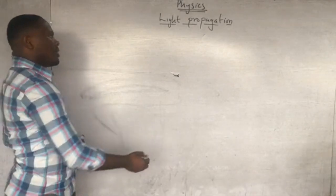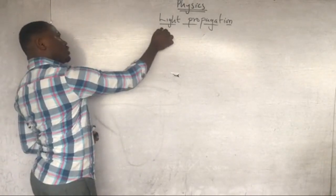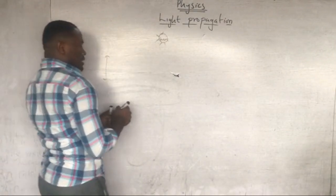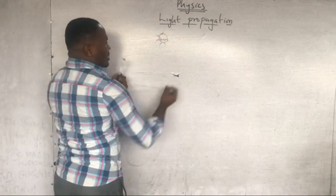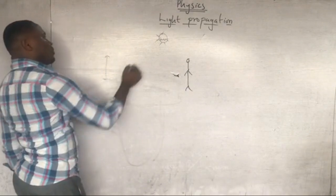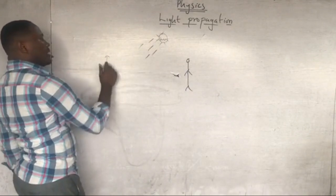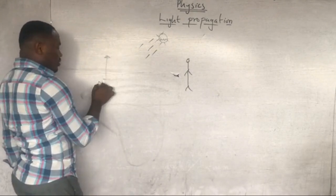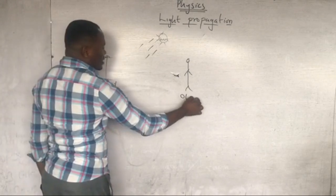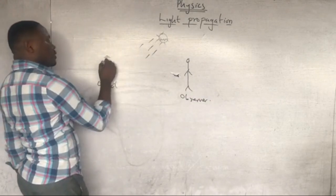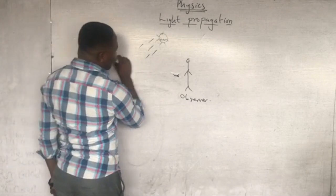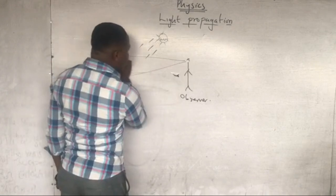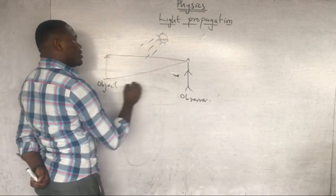So how does light work? If this is a source of light — let's say the sun — and this is an object, and this is an observer, the rays of light that shine from the sun strike the object. The rays of light from the sun strike the object and are reflected.